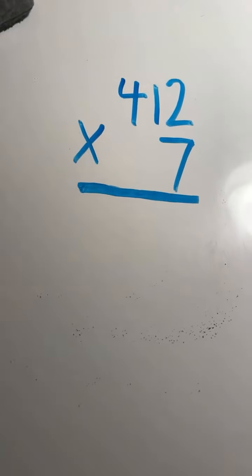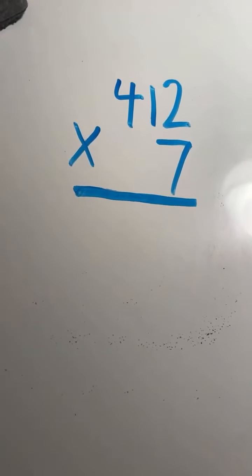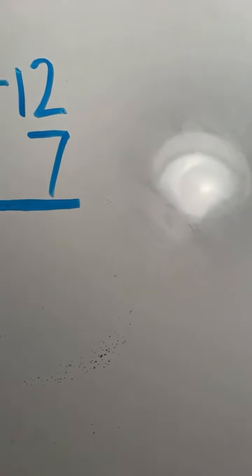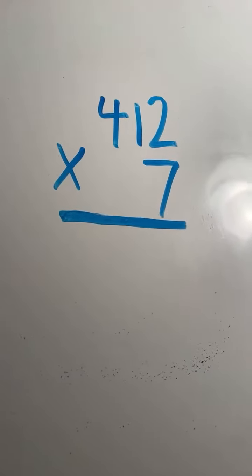All right, next example problem we have 412 times 7. So we start in the ones place. We're going to start off by multiplying 2 times 7. 2 times 7 equals 14.